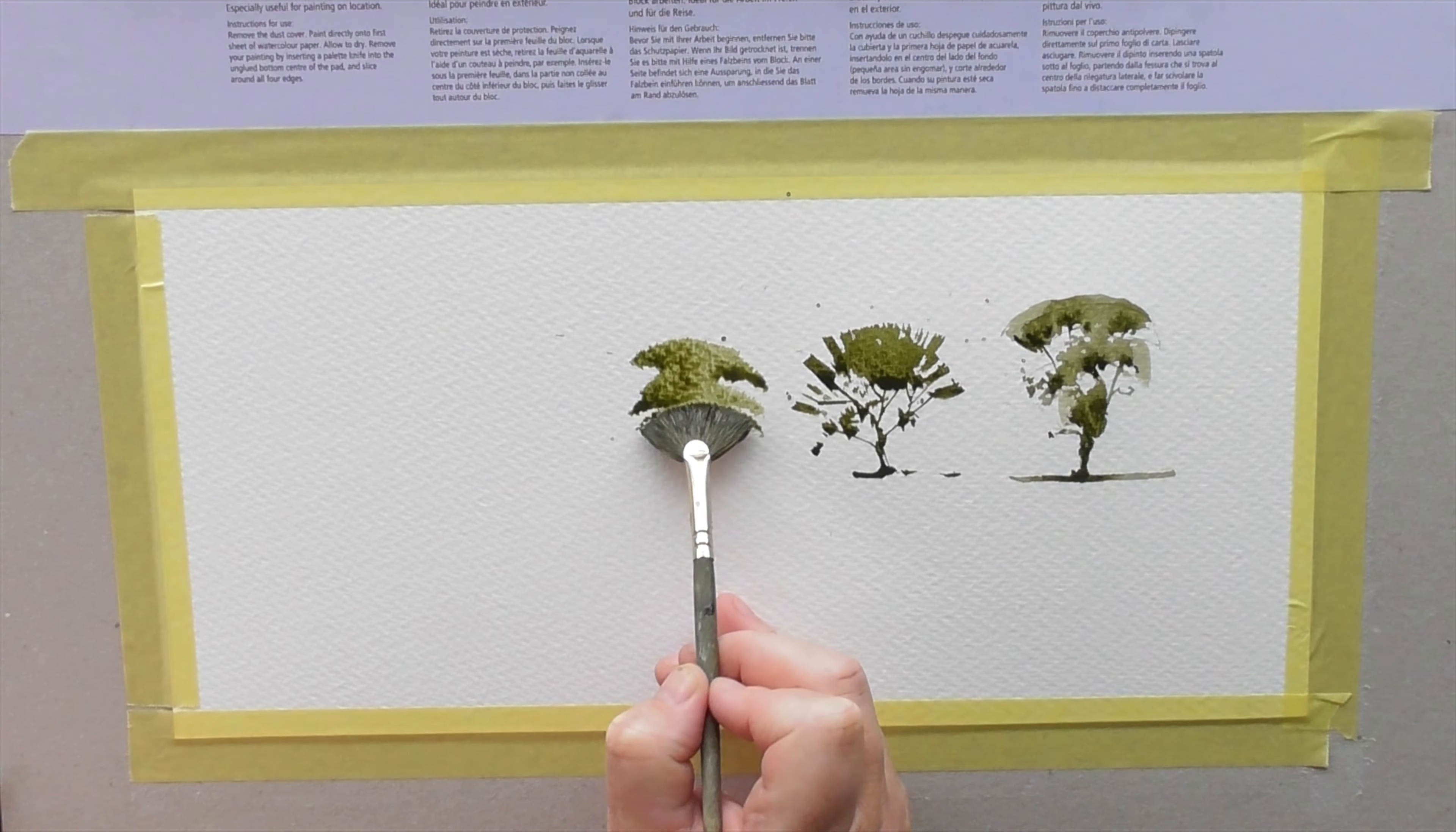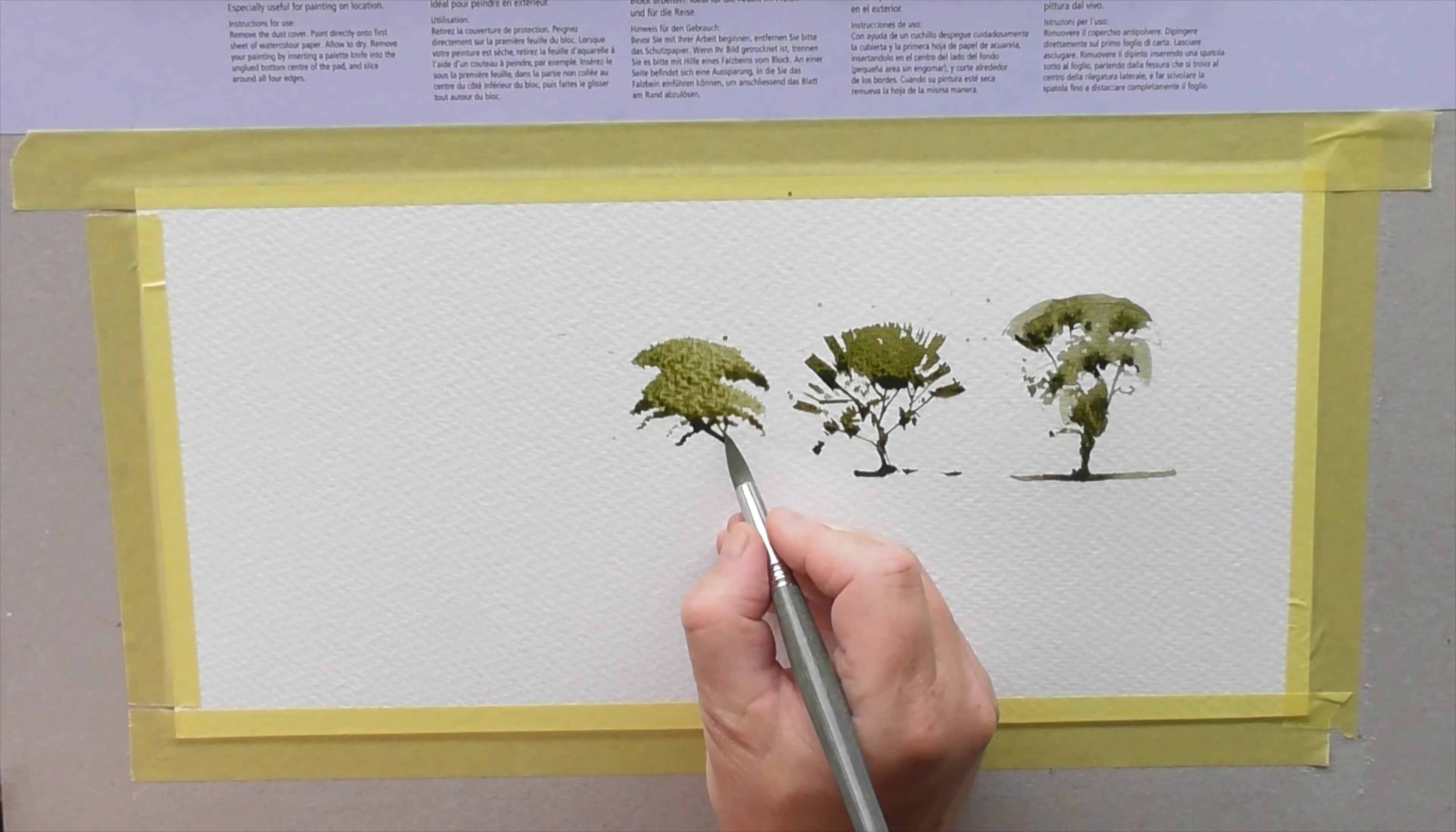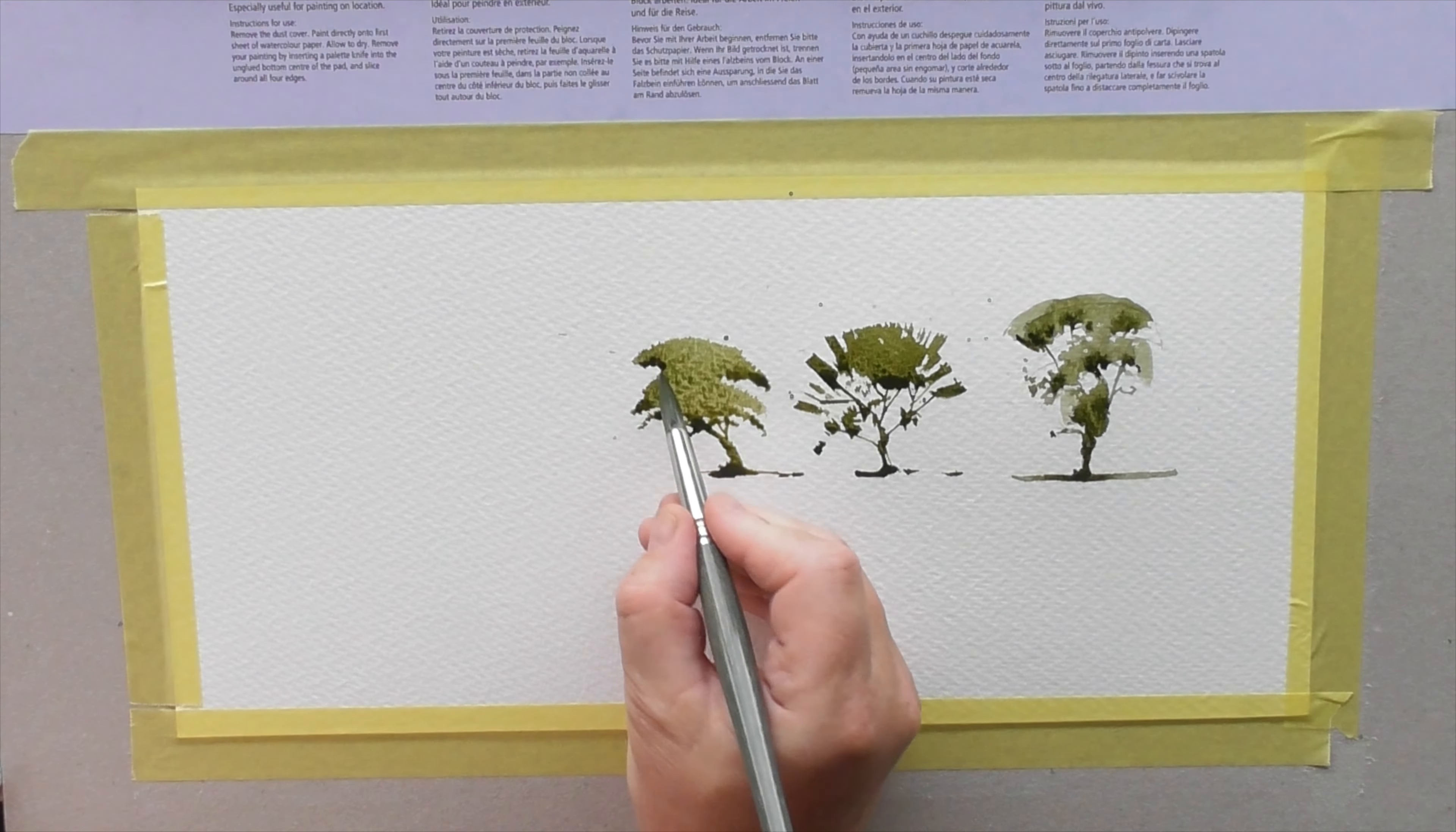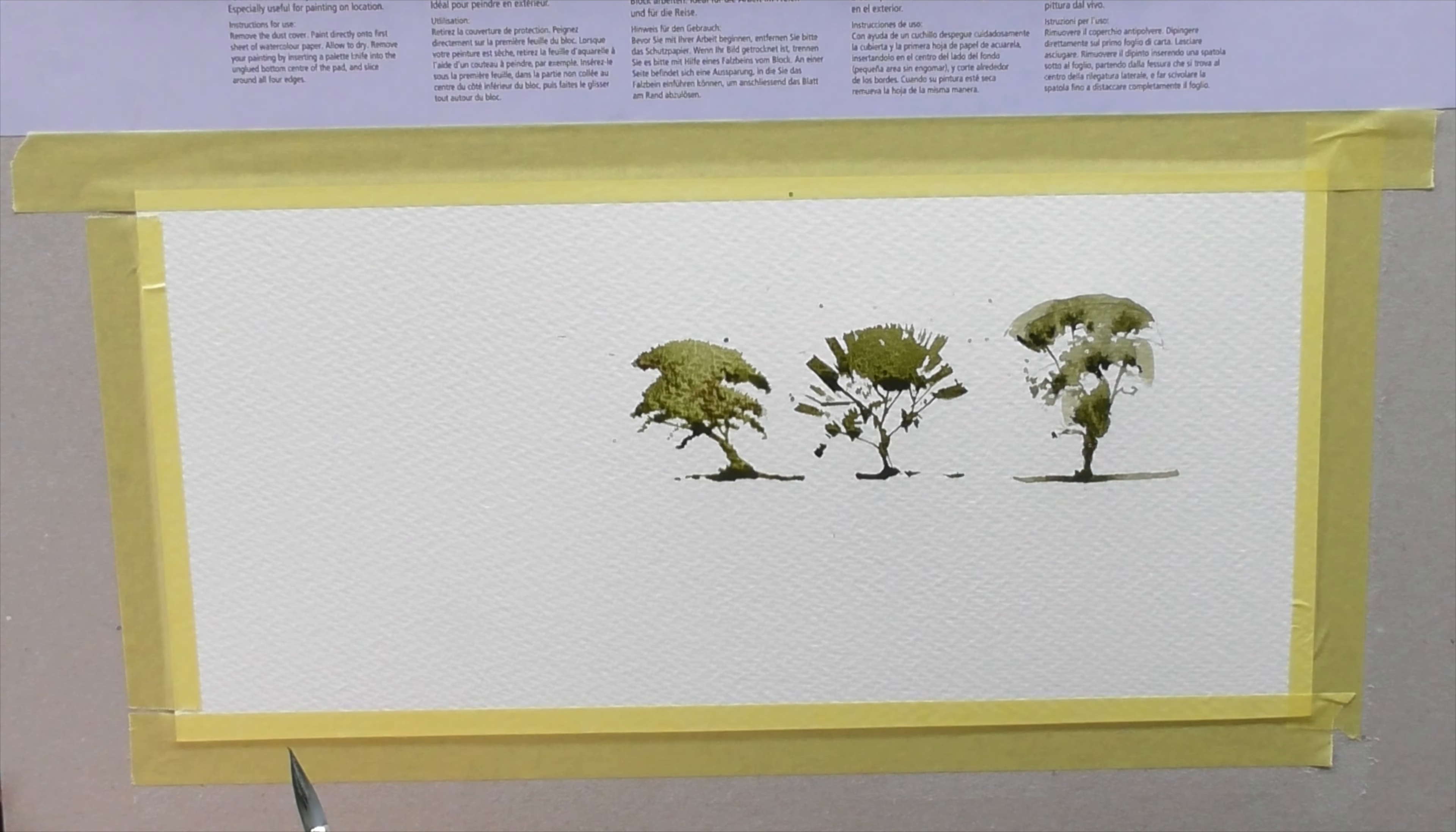And you just move it from side to side, eventually it'll come down to there. There we go. And as it's at its darkest points, we just put a couple of extra bits of shadow in there. There you go, that's how you do little trees. That was simple.